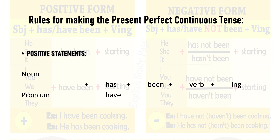What are the rules for making the present perfect continuous tense? We have positive statements, negative statements, questions, and other interrogative forms. When we have a noun or a pronoun, we add 'has' or 'have', then 'been', plus the verb with '-ing'.